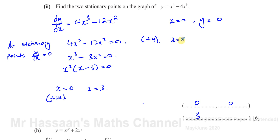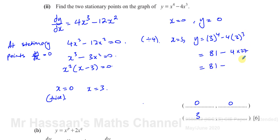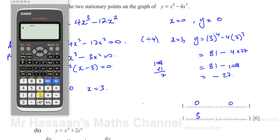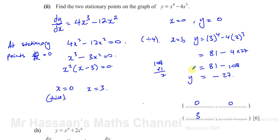And when x equals 3, y equals 3 to the power of 4 minus 4 times 3 to the power of 3, which is 81 minus 4 times 27. Because 3 cubed is 27, that's 81 minus 108. If you subtract them, you get negative 27. We can confirm that in the calculator: 3 to the power of 4 take away 4 times 3 cubed gives negative 27. So when x is 3, y is negative 27.